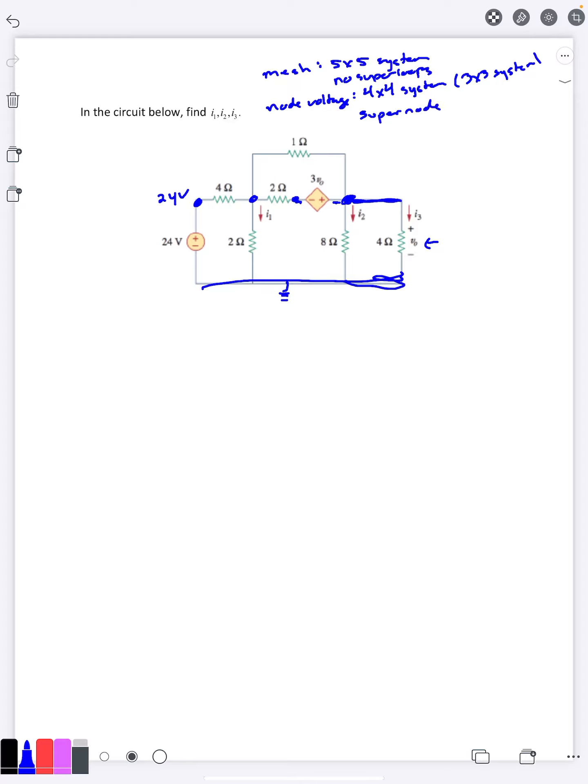So there's pros and cons to using each of these systems. They both will work. There's nothing wrong with either one of them. It just kind of depends on how much work you want to do and your personal preferences. Some students prefer to always use node voltage or to always use mesh current. And that's fine. But it's definitely superior to understand both methods so that you can adapt when the problem happens to be significantly easier in one way.